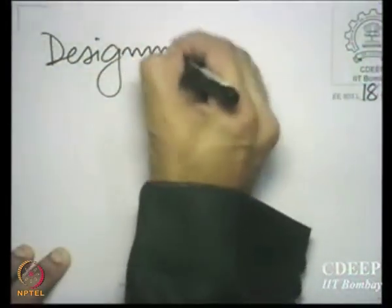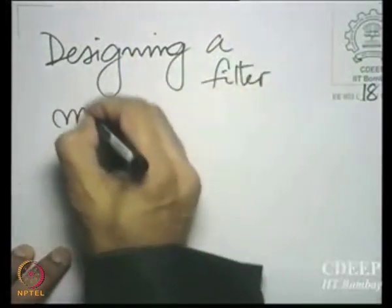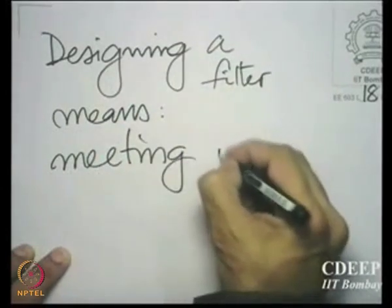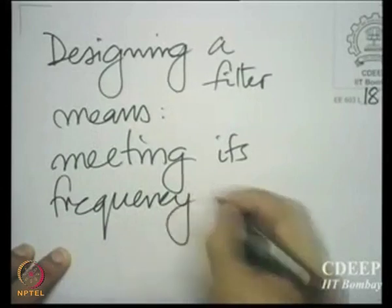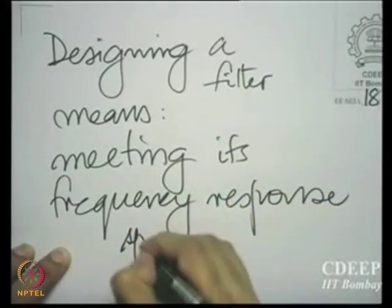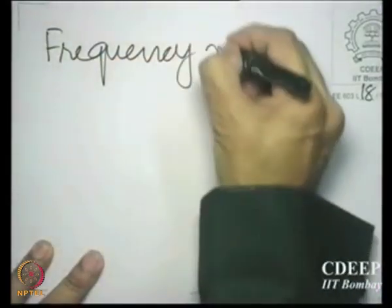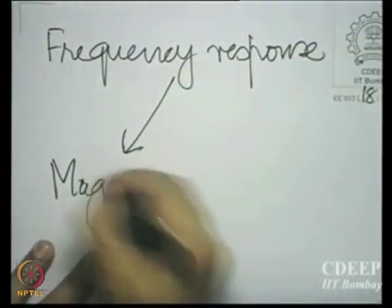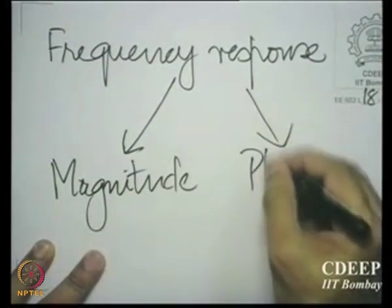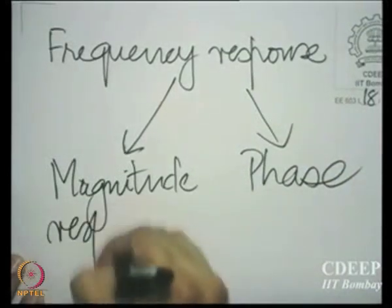What do you mean by designing a filter? Designing a filter means meeting the frequency response specifications. And when you say frequency response specifications, what are you talking about? There are two parts of a frequency response: a frequency response has a magnitude and a frequency response has a phase. And therefore, we talk about a magnitude response and a phase response.